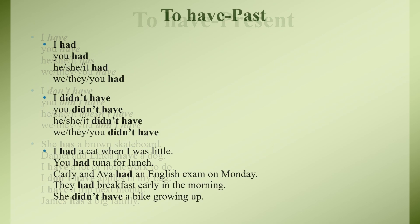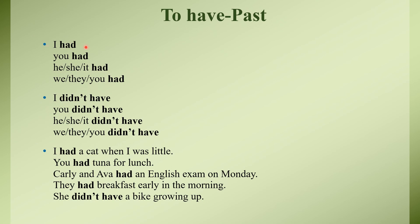Now the past form of 'to have' is 'had'. I had, you had, he/she/it had, we/they/you had. To make a negative sentence with had, we use 'did not have' — yaha pae have main verb ki tarah hai aur did past form hai, so 'didn't have' means 'hadn't'. For example: 'I had a cat when I was little.' 'You had tuna for lunch.' 'Carly and Anna had an English exam on Monday.' 'They had breakfast early in the morning.' 'She did not have a bike.' This is the 'to have' form of the verb.